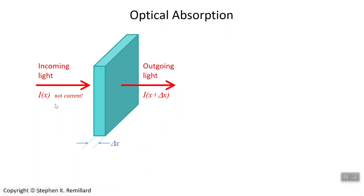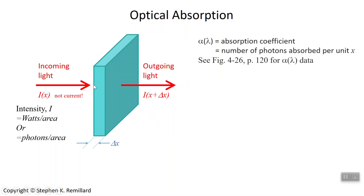So we have light coming in with intensity I of x. Intensity is watts per square centimeter and it comes out with a different intensity, whatever it is at x plus delta x. We're going to model this by coming up with a coefficient for the absorption of that light, because for sure less light comes out the other end than went in the front end.